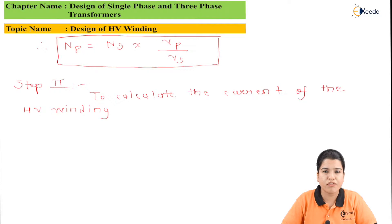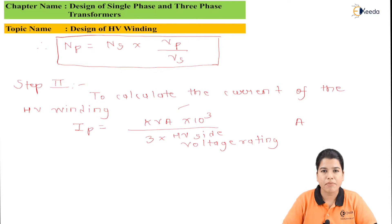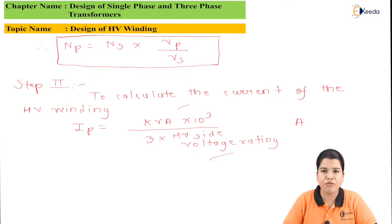After calculating the number of turns of the HV winding, the next step is to calculate the current of the HV winding. The formula for this is: IP equals KVA multiplied by 10 raised to 3, divided by 3 times the HV side voltage rating. The unit of current is ampere.